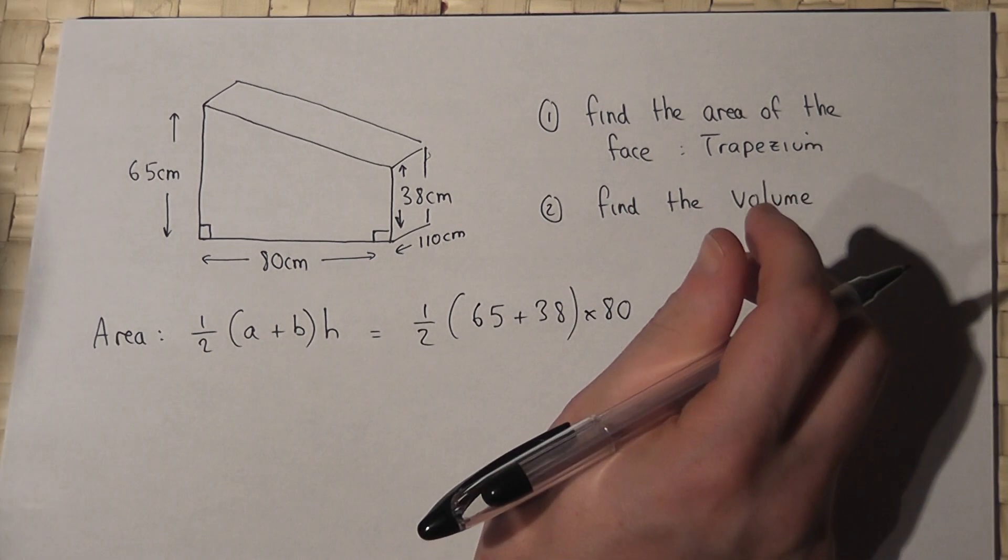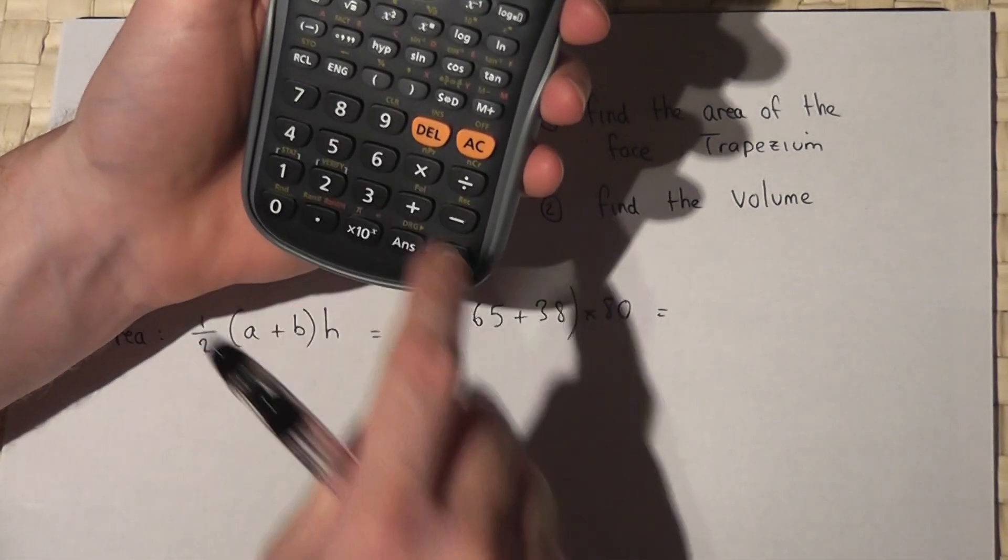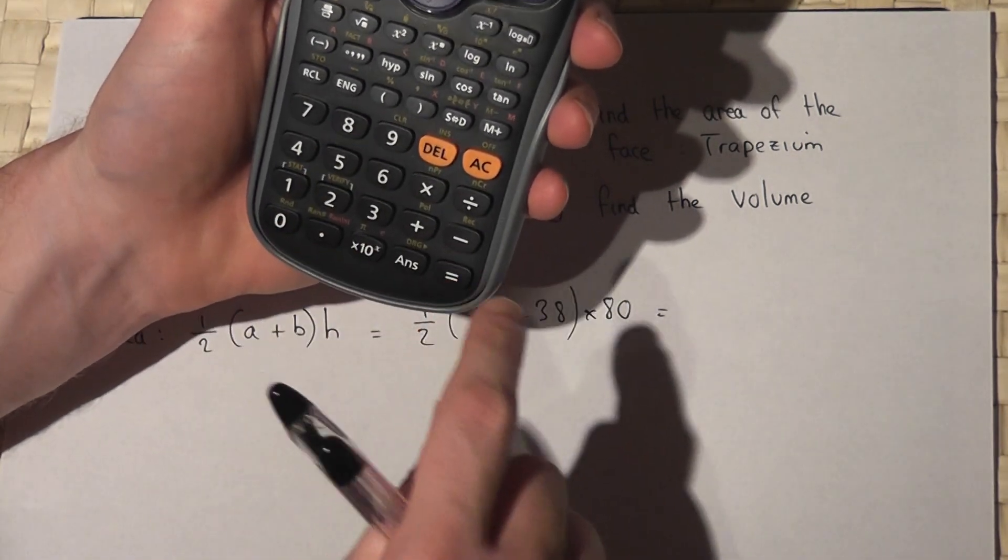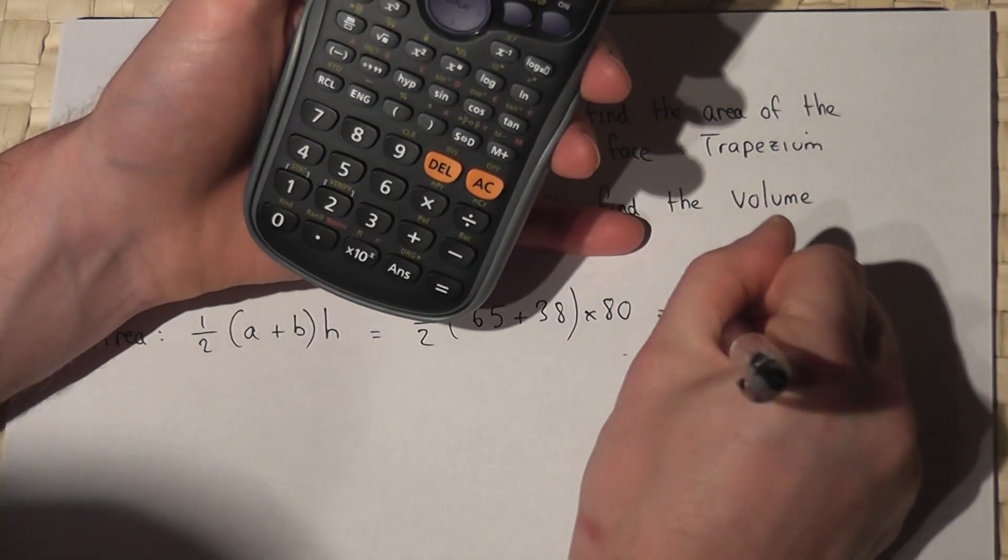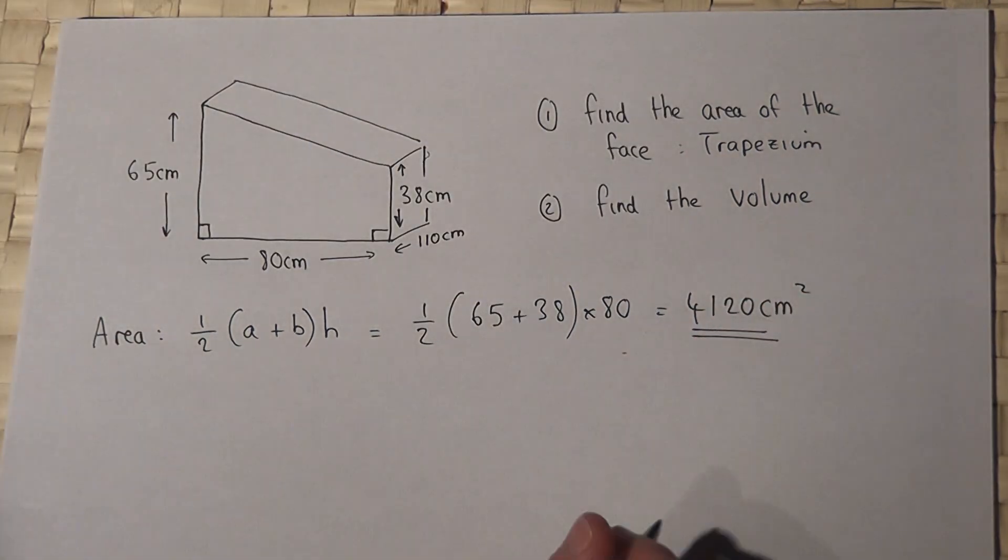Right then, so I'm going to calculate it out. We've got 65 plus 38, press enter, times by 80, and then divide by 2. So 4120 centimeters squared. That's part 1.